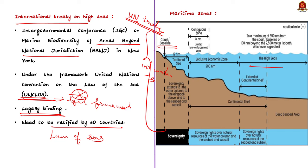The territorial sea extends seaward up to 12 nautical miles from the baseline. Coastal states have sovereignty and jurisdiction over the territorial sea. These rights extend not only on the surface but also to the seabed, subsoil, and even the airspace. However, the coastal states' rights are limited by innocent passage through the territorial sea.